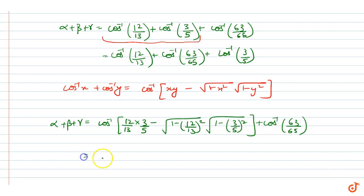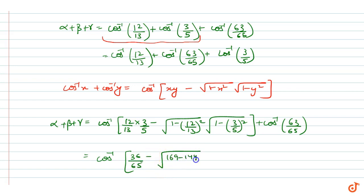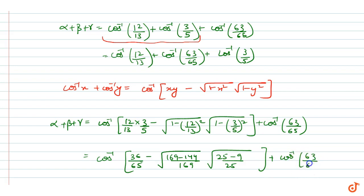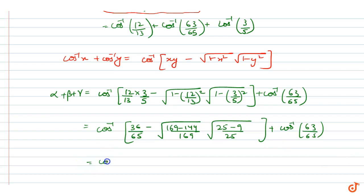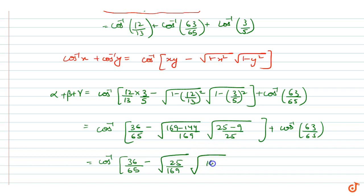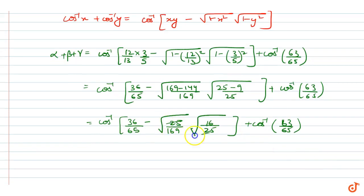Computing the step: cos⁻¹(12/13) + cos⁻¹(3/5) = cos⁻¹(36/65 − √((169−144)/169) · √((25−9)/25)) + cos⁻¹(63/65). This gives cos⁻¹(36/65 − √(25/169) · √(16/25)) + cos⁻¹(63/65).